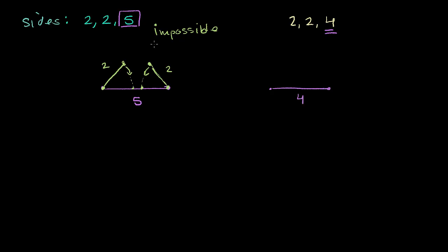And then in order to make the two sides of length 2 touch, you have to rotate them all the way inward, so that both this angle and this angle essentially have to become 0 degrees.